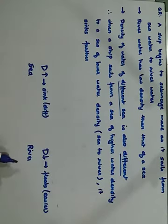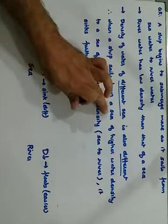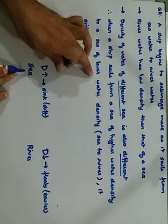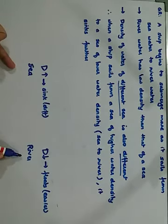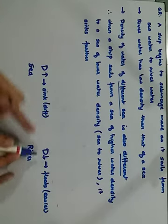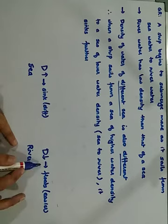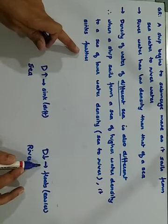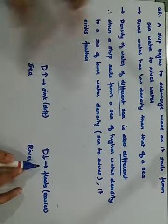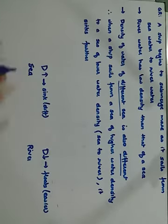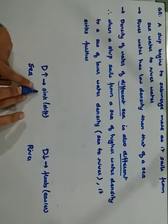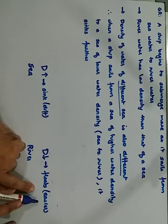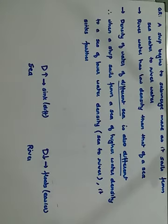Different seas have different water densities due to salinity. When a ship sails from sea to river, the density goes on decreasing, so it sinks further into the water, making it difficult for the ship to move. In sea water with higher density, the ship floats more and it is easier to sail. In river water with lower density, more of the ship is submerged and it is harder to sail.